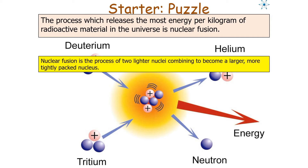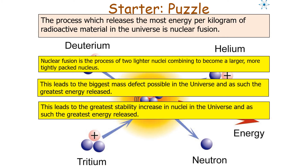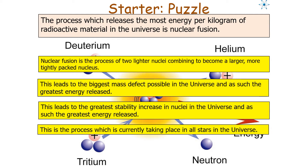Nuclear fusion is the process of two lighter nuclei combining to form a larger, more tightly packed nucleus. This leads to the biggest mass defect possible in the universe and therefore the greatest energy released. This leads to the greatest stability increase in nuclei in the universe. This is a process which is currently taking place in the core of all stars in our universe.